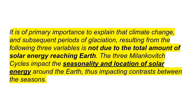This next quote from the Indiana University web page is very important. It reads: it is of primary importance to explain that climate change and subsequent periods of glaciation resulting from the three Milankovitch variables is not due to the total amount of solar energy reaching Earth. The three Milankovitch cycles impact the seasonality and location of solar energy around the Earth, thus impacting contrast between the seasons. Ice ages are not due to the total amount of solar energy reaching the Earth — it's variations in the seasonality and location of the solar energy which causes the ice ages.